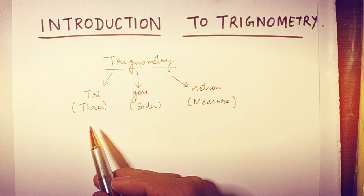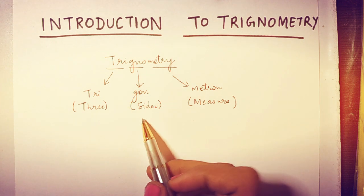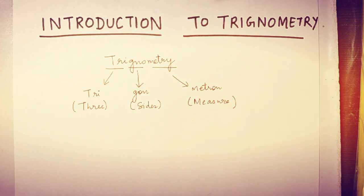First we have tri, tri means three, gon means sides, and metron means measure. So basically trigonometry is nothing but the study of relationship between the angles and sides of a triangle.